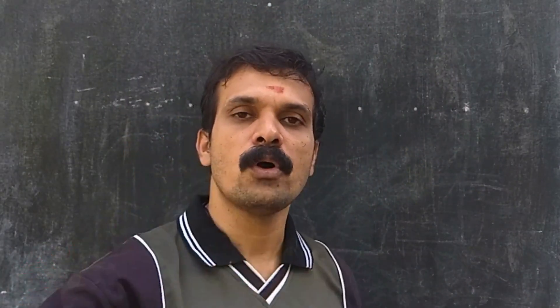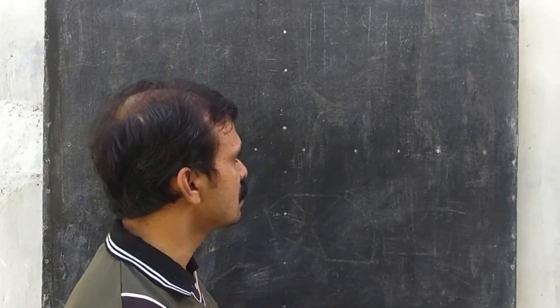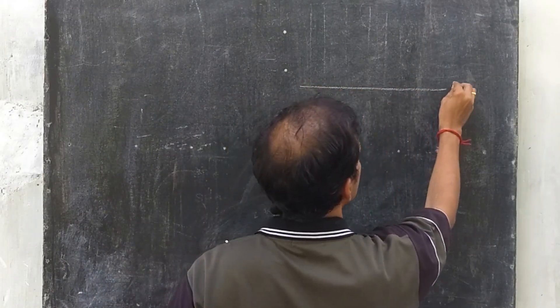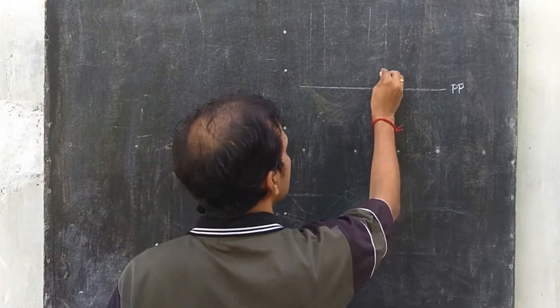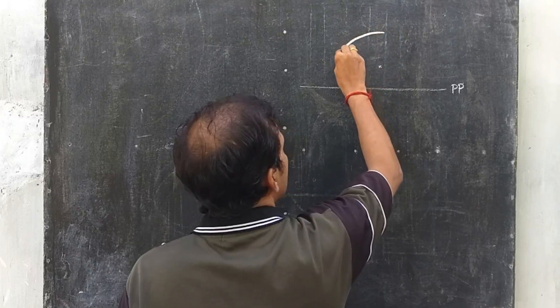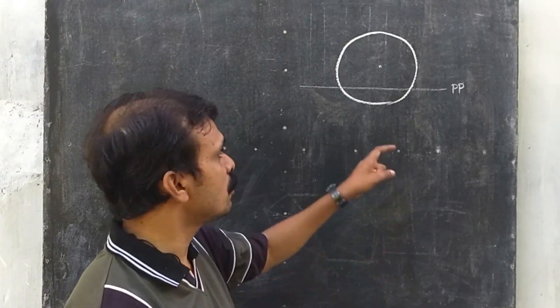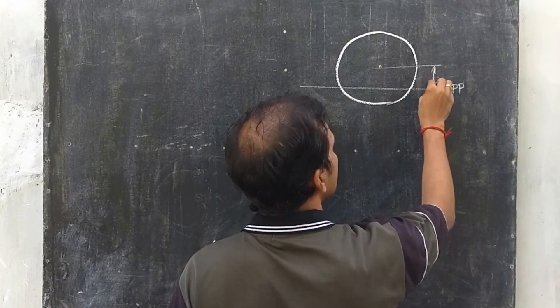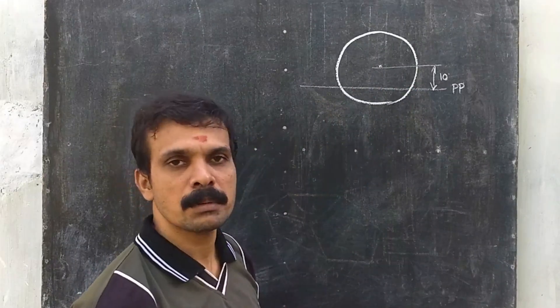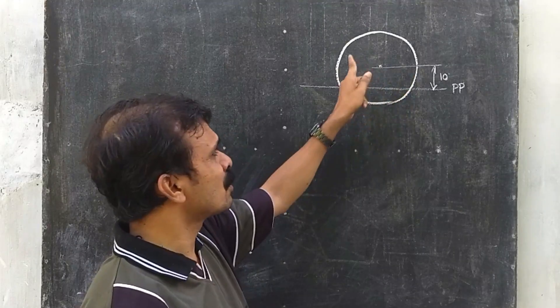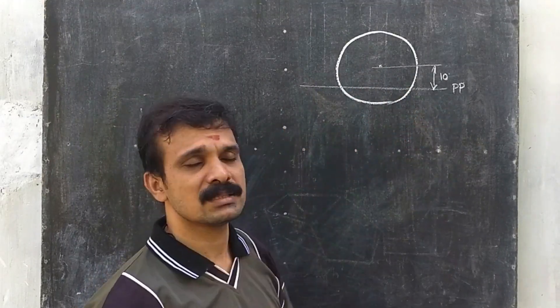The cone is resting on the ground, so in the top view you can see the base of the cone. The axis of the cone is 10 mm behind the picture plane. So if this is the picture plane, at a distance of 10 mm behind the picture plane you can draw the cone of diameter 50 mm. You can draw the picture plane at 10 mm from the center.